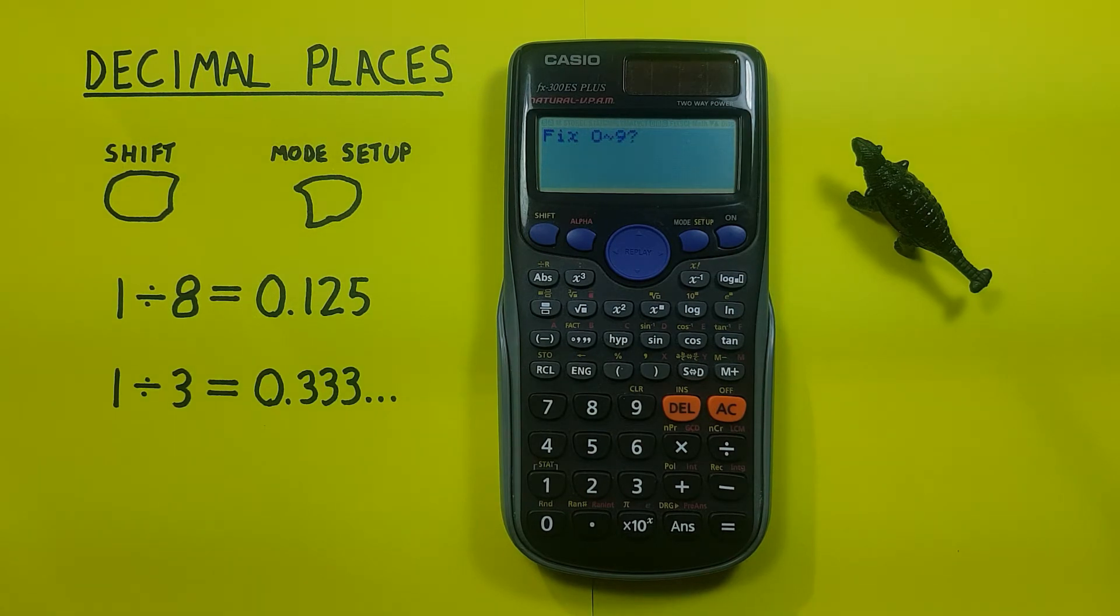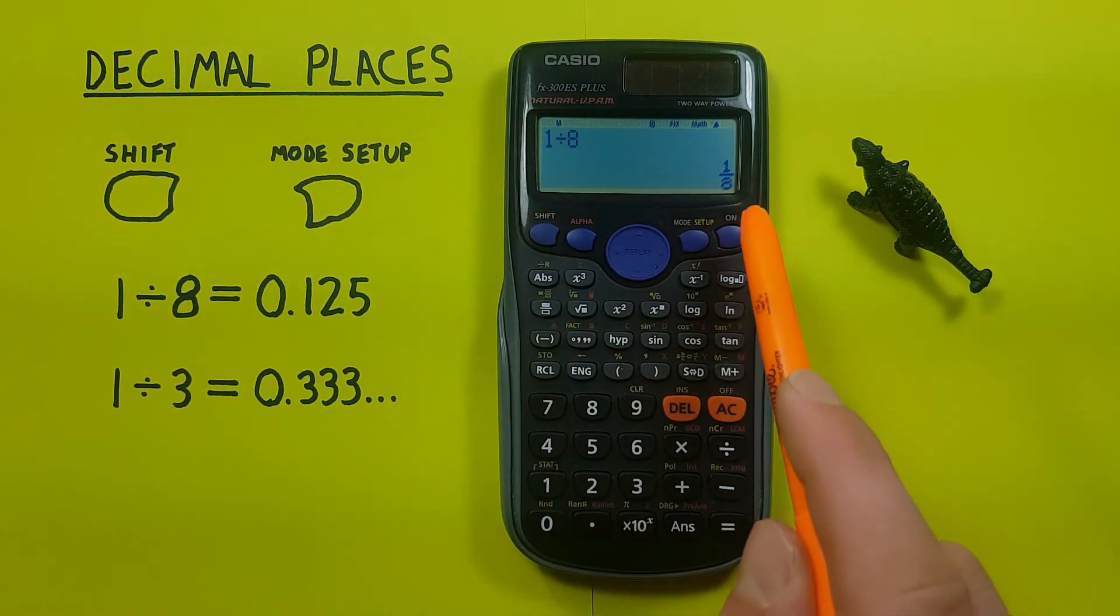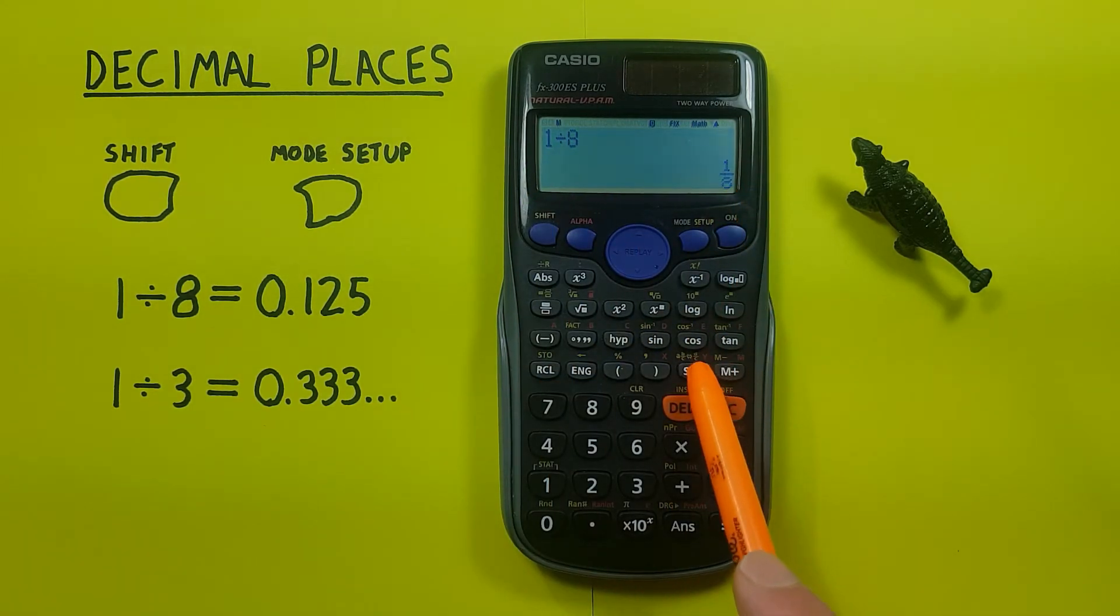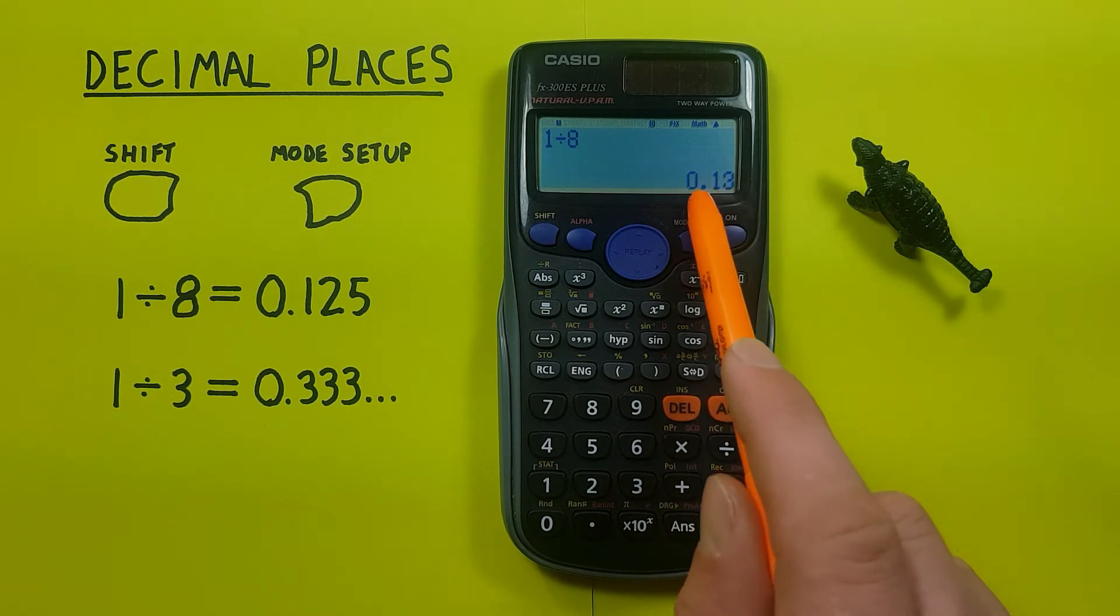For this example we'll be doing two decimal places, so we press 2 and we're back to the main screen. If we convert that fraction to a decimal we see we now have 0.13.